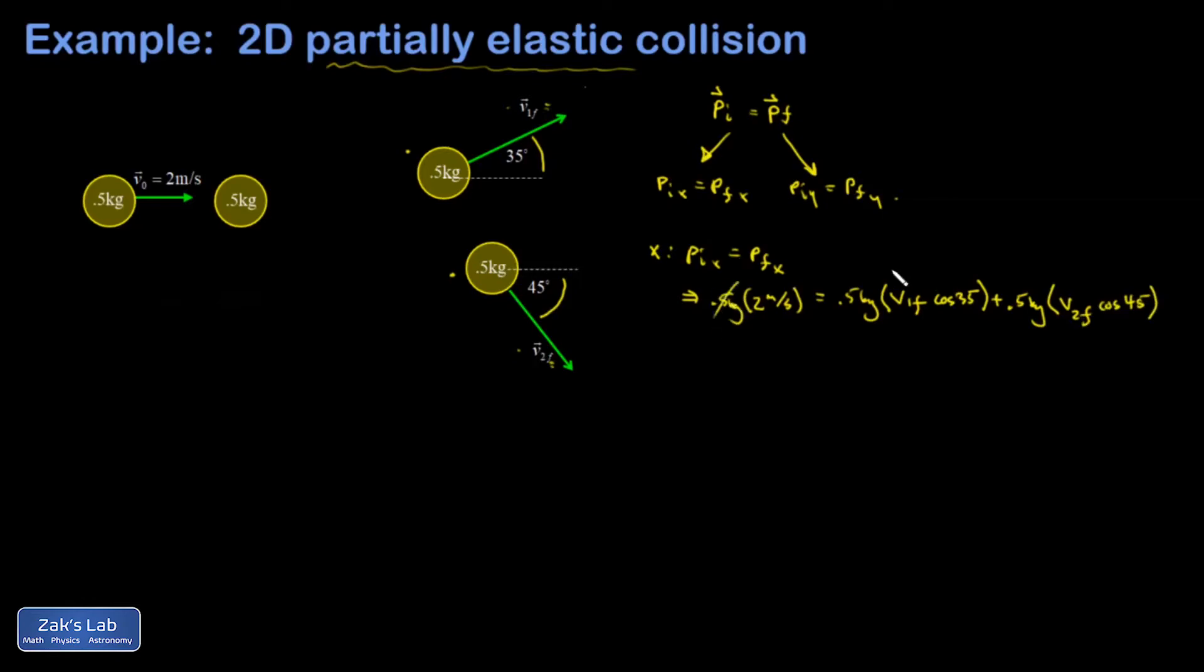So we can cancel out these 0.5 kilogram masses. And I get my first important equation. I'm not going to write it with units because I'm getting ready to just do the algebra. And I get 2 equals V1 final cosine 35 plus V2 final cosine 45.